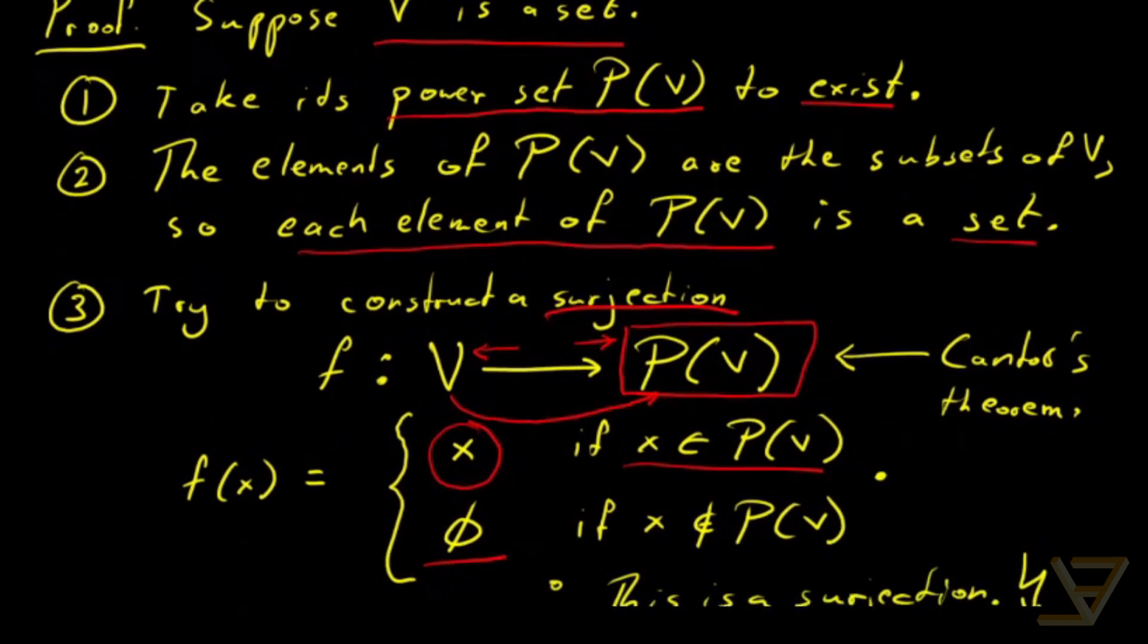And in the end what we did is that we constructed a surjection from V to the power set of V which is impossible according to Cantor's theorem. Therefore, there can be no set of all sets.